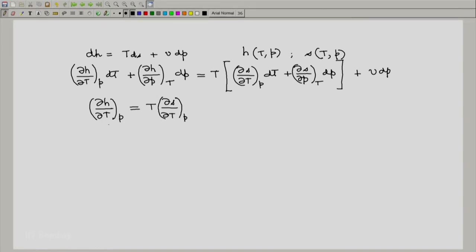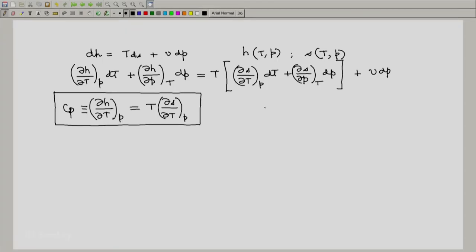But dH by dT is already defined as CP, the specific heat at constant pressure. Hence we now have an alternative expression for CP in terms of S, T and P. I will leave it as an exercise to show that CV, defined as partial of U with respect to T at constant V, equals T times partial of S with respect to T at constant V.